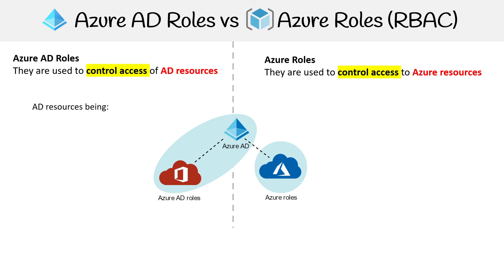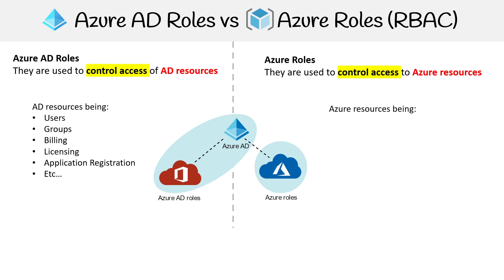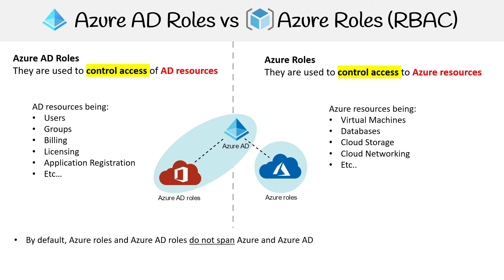An AD resource could be something like users, groups, billing, licensing, application registration, and so on. On the right-hand side, Azure resources could be virtual machines, databases, cloud storage, cloud networking, and etc.